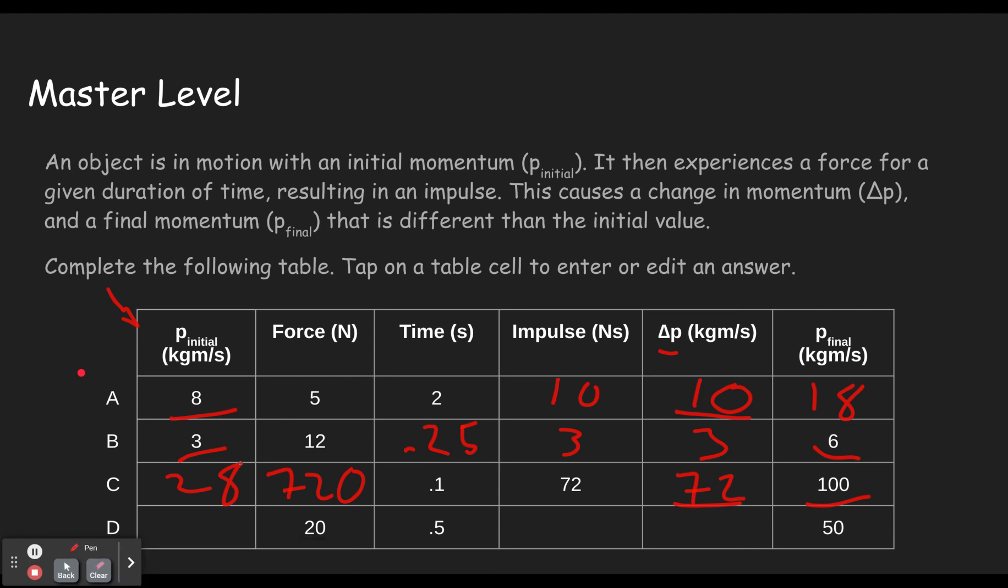And our final problem here, force times time, 20 times 1 half gives us 10. It means a change in momentum of 10. If we change by 10 and end up with 50, we must have started with 40. Because 40 changing by 10 gives you 50.